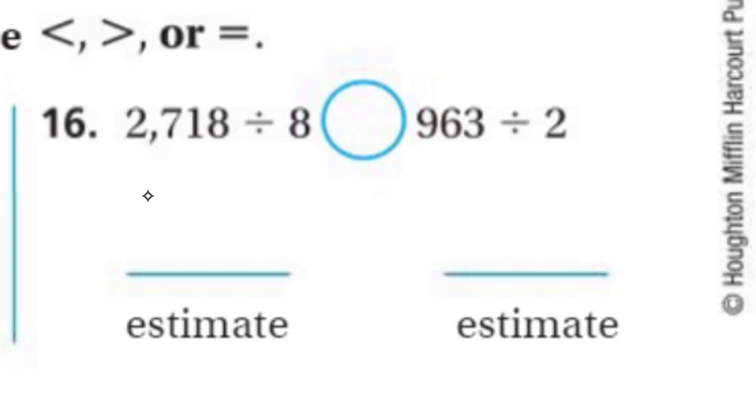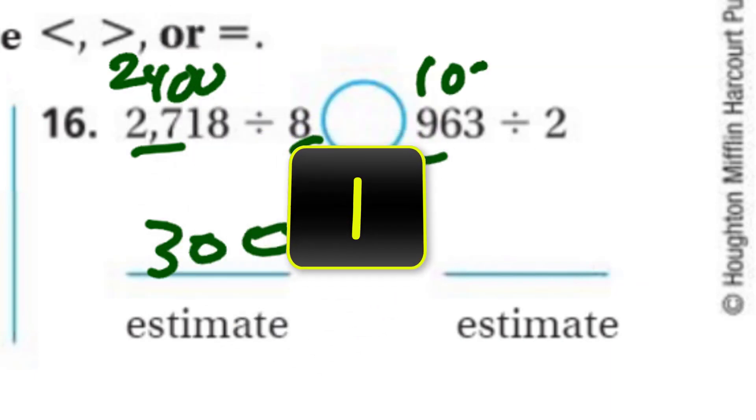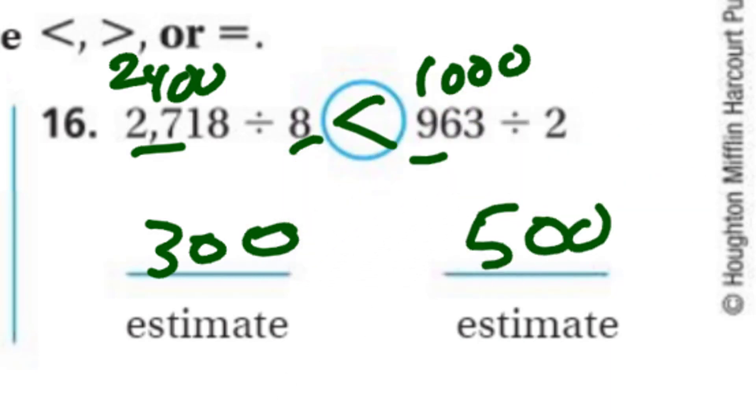Last one. Now we have 2,718 divided by 8. I'm only interested in the first two digits for my basic fact. And 26. No. That's going to 24. Going to have to bring it down to 2,400 divided by 8 is going to equal 300. So we have 300 here. On this side, the 96 could be split in half, but let's just make that easy 1,000. Divide that by 2, we're going to end up with 500. And you can see the less one than that.